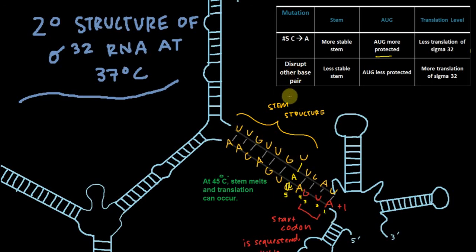Now what if, instead of that happening, instead of this being switched to an A, we disrupt some other base pairs? So let's just say that this A now becomes another U. This would result in this base pairing event no longer being able to happen because U cannot base pair with U.